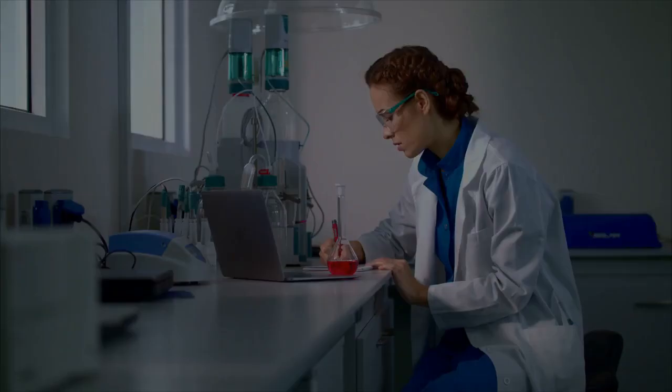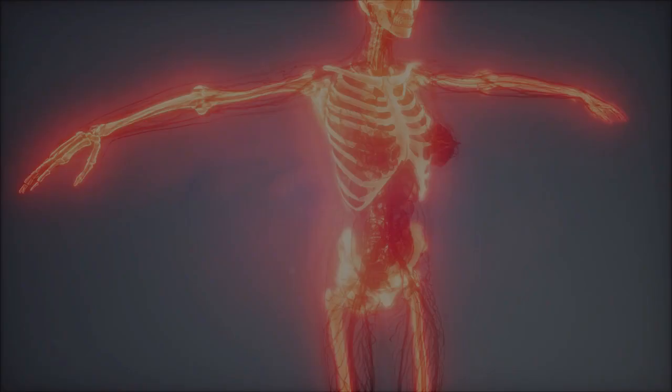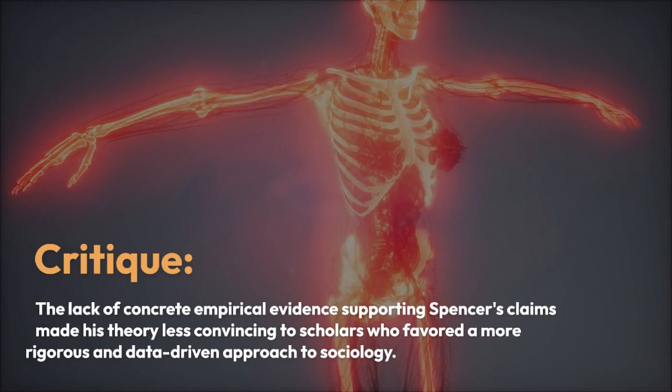Criticism 3 — Lack of Empirical Evidence: Spencer's theory relied heavily on abstract principles, and some critics argued that it lacked empirical evidence to support its claims. Social scientists in the 20th century moved away from Spencer's theoretical framework in favor of more evidence-based approaches to understanding societal evolution. The lack of concrete empirical evidence made his theory less convincing to scholars who favored a more rigorous and data-driven approach to sociology.